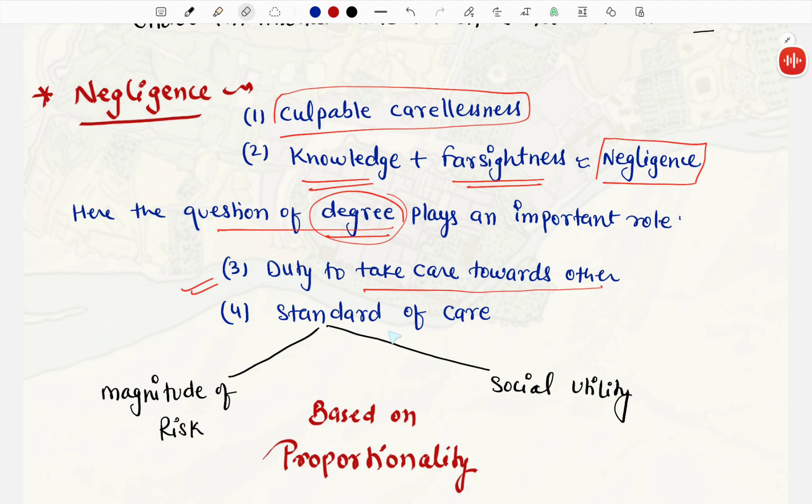Aur ek fourth point hai, standard of care. Standard of care bhi depend karti hai, ki aap negligence ke andar hain ya nahi. Standard of care bhi further divide hai, magnitude of risk, aur social utility. Standard of care ka matlab, aap kisi hospital mein gaye hai, aapko ek side corner me admit kar diya hai, no one is taking care, aapko medicine mil raha hai ki nai. Standard of care, matter karti hai. Aur ek general basic idea, jo word hum use karti hai, negligence, is based on proportionality.